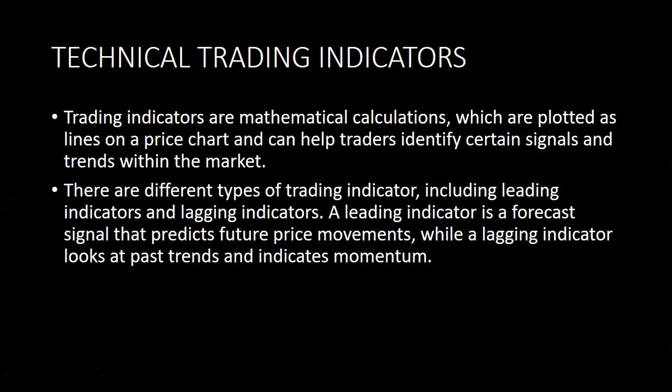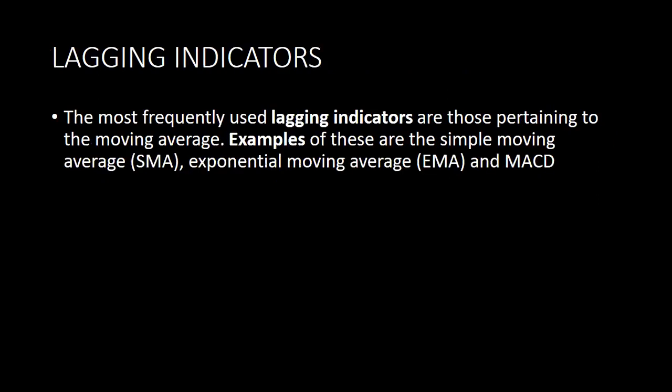There are different kinds of indicators, and like their name implies, they indicate different things. They could either indicate the trend or they could indicate the momentum of a particular asset being traded. They can indicate if the market is in an uptrend, a downtrend, or even a ranging market.